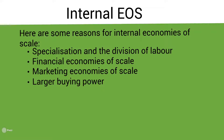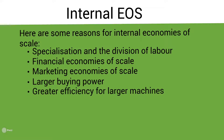The next example is greater efficiency for larger machines. Larger machines may be more efficient because a machine may require only one worker whether it is large or small. Therefore, bigger machines result in more output per worker, and a larger firm that produces more output may be able to employ larger machines than smaller firms.